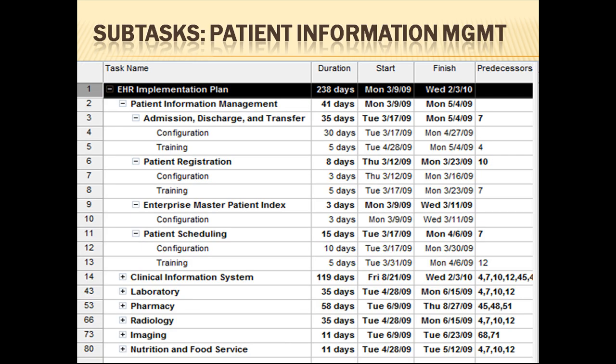Each of the tasks mentioned in the previous slide have certain subtasks that must be completed. Each of these subtasks has a configuration component and usually a training component as well, but not always. One important thing to note is that training for any of the subtasks can only begin when the configuration has been completed. However, more than one training can occur simultaneously. Whenever the start of one task is dependent on another, Microsoft Project makes it easy to link this dependency by inputting the row number of that task in the predecessor column, as you can see in the table.